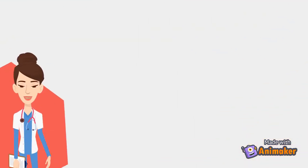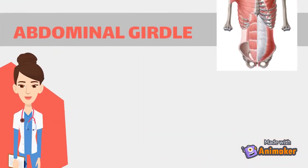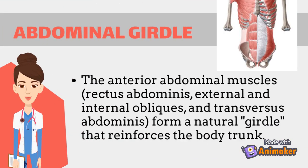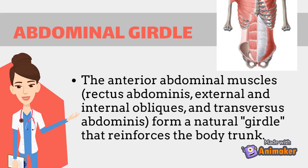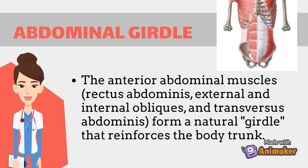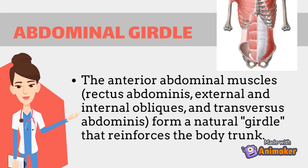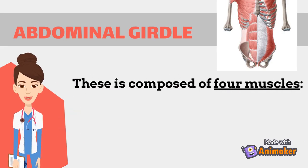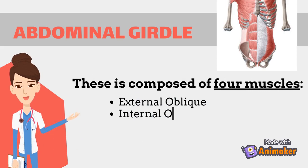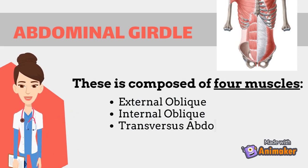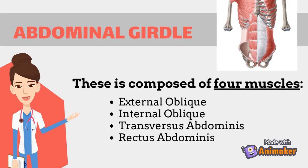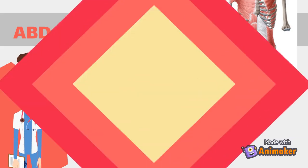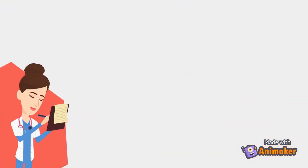The third group is the muscles of the abdominal wall. The anterior abdominal muscles — rectus abdominis, external oblique, internal oblique, and transverse abdominis — form a natural girdle that reinforces the body. These muscles are composed of five muscles: the external oblique, internal oblique, transverse abdominis, rectus abdominis, and the posterior muscles.